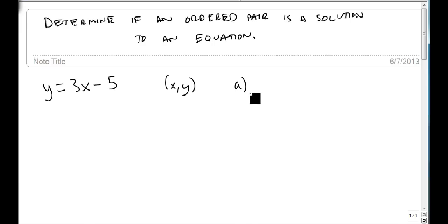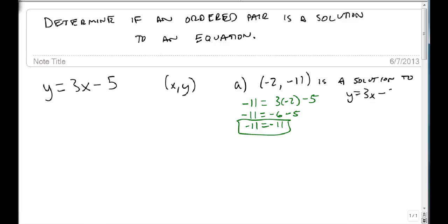We're going to start with minus 2, minus 11. Let's see if this works. Remember, this is in x-y order, so wherever I see an x, I'm going to put a negative 2, and wherever I see y, I'm going to put a negative 11. So we end up with negative 11 equals 3 times negative 2 minus 5. Negative 11 equals minus 6 minus 5. Notice I get minus 11 on both sides. That means it worked. So yes, this is a solution to y equals 3x minus 5.